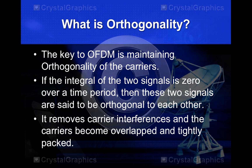The 'O' in OFDM stands for orthogonal — so what is orthogonality? The key to OFDM is maintaining orthogonality of the carriers. The formula for orthogonality is the integral of two signals: if the integral of two signals is zero over a time period, those two signals are said to be orthogonal. This removes carrier interference and allows carriers to overlap and be tightly packed.